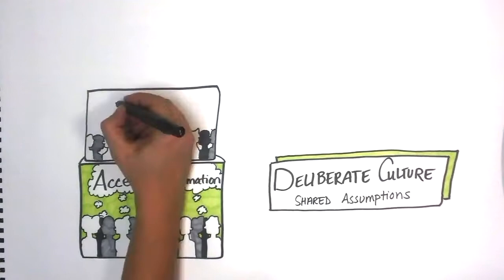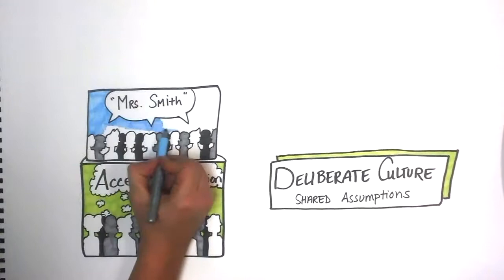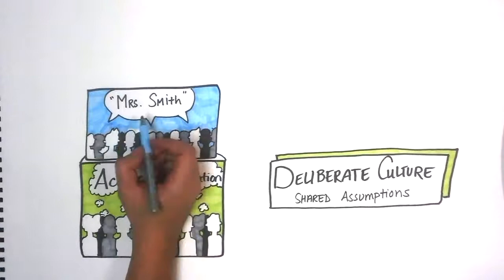The third, uppermost tier concerning person-centered systems is represented by artifacts. Artifacts are actions that demonstrate the deliberate culture and the espoused values of an organization.